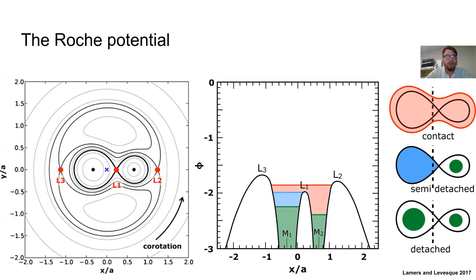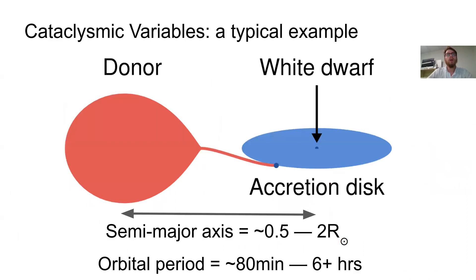Before talking about cataclysmic variable stars, I'd like to introduce the Roche potential — the gravitational potential in the co-rotating frame of a binary star. The so-called Roche lobe is the area of space where the gravity of one star dominates, and particles within that Roche lobe can't escape. However, if your star exceeds the size of the Roche lobe, it will start to lose material towards the other star, as shown here on the right. How this process will exactly happen varies on the nature of both stars — we'll see a few examples later.